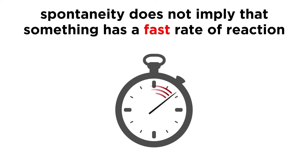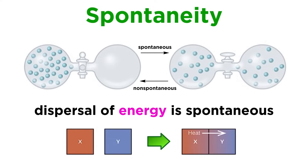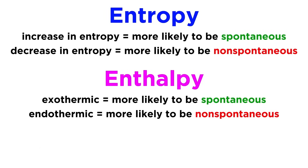There are spontaneous reactions that happen in a split second, and there are some that happen over many years. We know that spontaneous processes favor the dispersal of matter and energy, whether this means a gas from a flask spontaneously moving to fill up an adjacent empty flask, or heat spontaneously flowing from hot to cold objects, like a hot coffee cup in your hand. But when looking at a chemical reaction, we also have to involve enthalpy. An exothermic reaction is more likely to be spontaneous, while an endothermic reaction is more likely to be non-spontaneous.